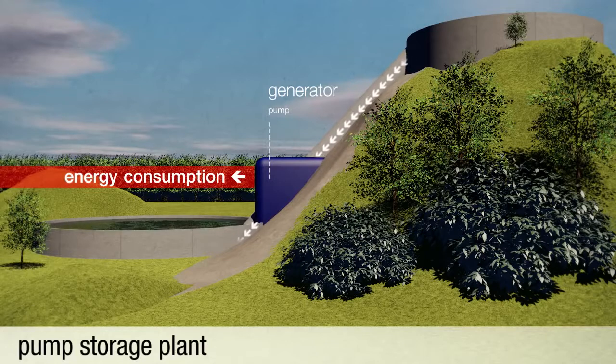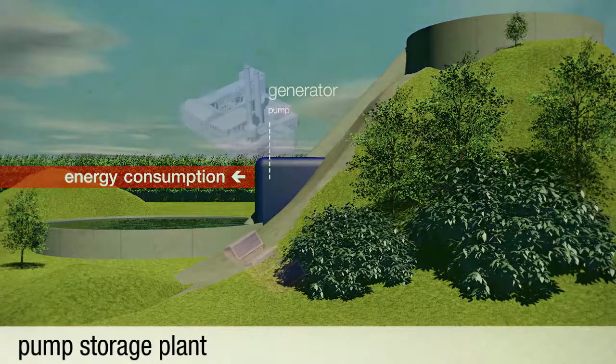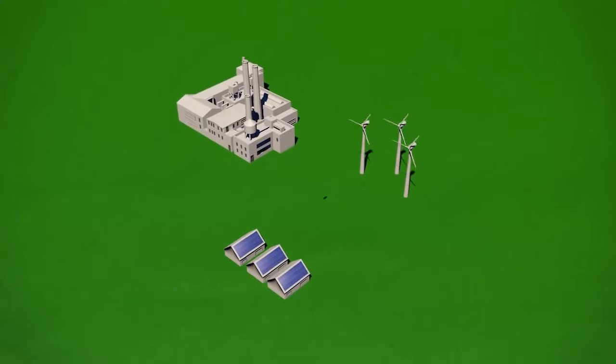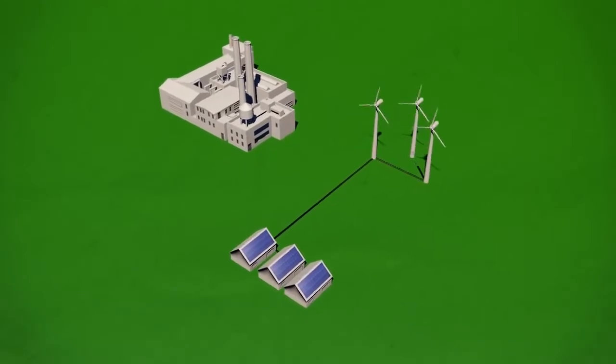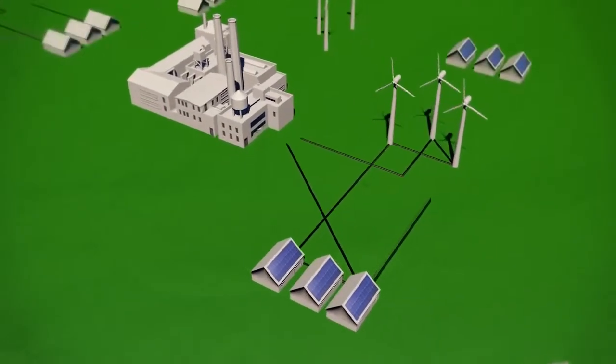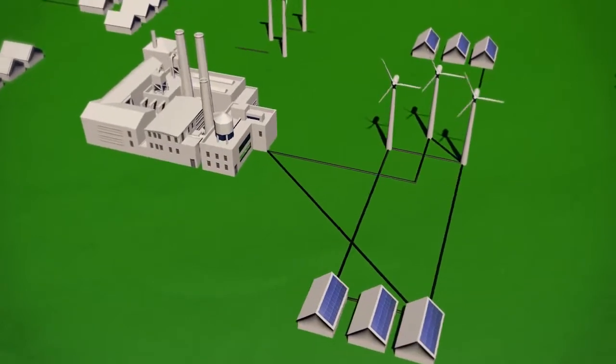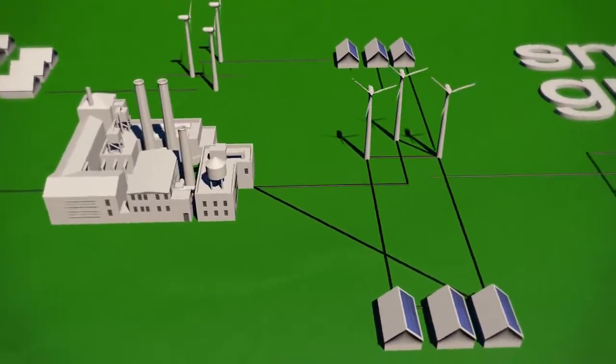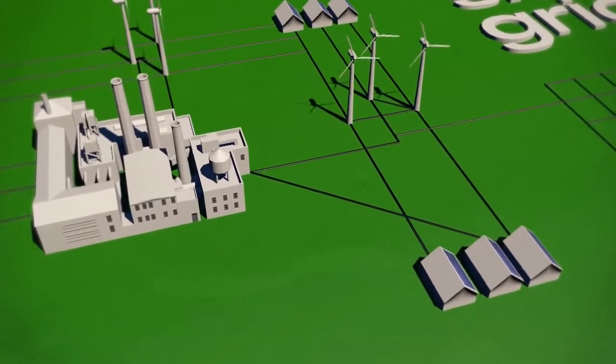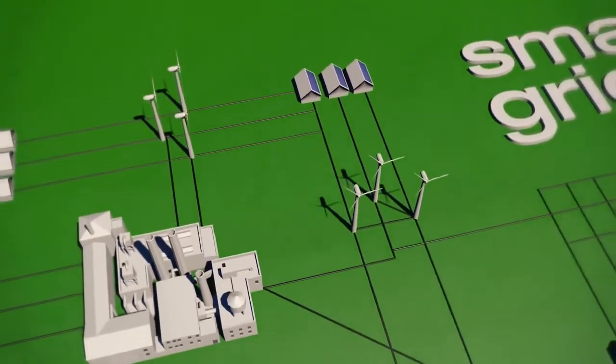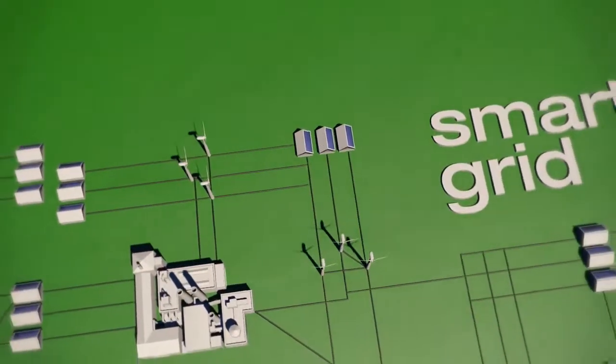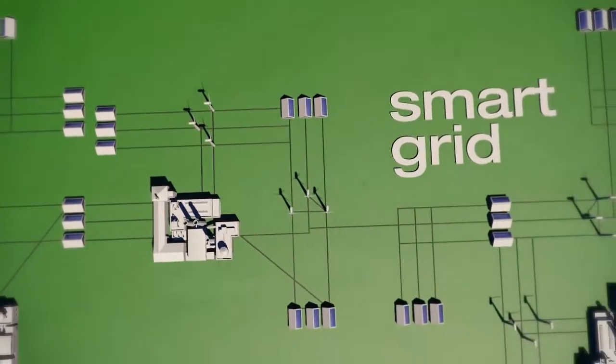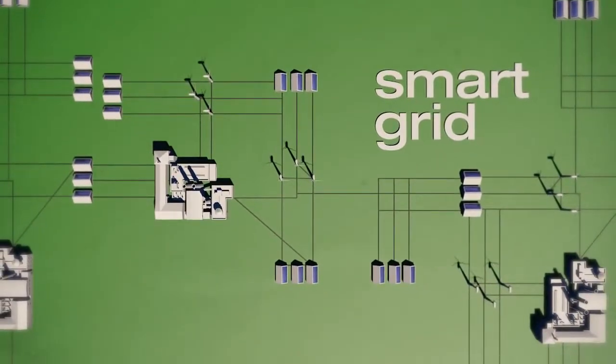A technical solution might be so-called smart grids. These intelligent power grids observe and link production, storage, and consumption of energy in a large integrated system. Depending on the demand for energy at a certain time, they can fine-tune energy production and moderate consumption. They balance fluctuations between energy supply and demand and integrate the many new decentralized producers into the power grid. Thus, the energy supply becomes more efficient and more reliable.